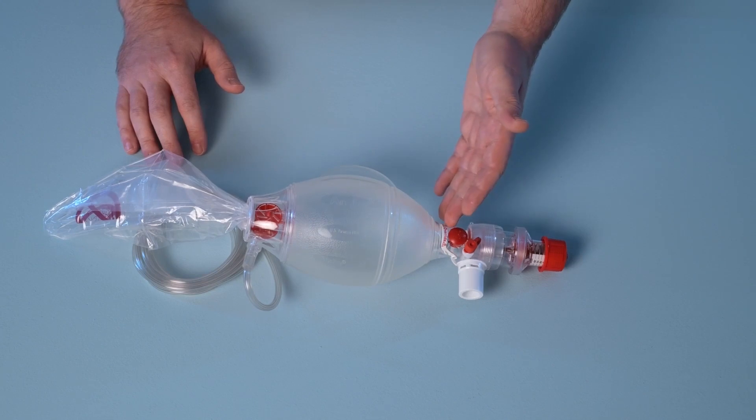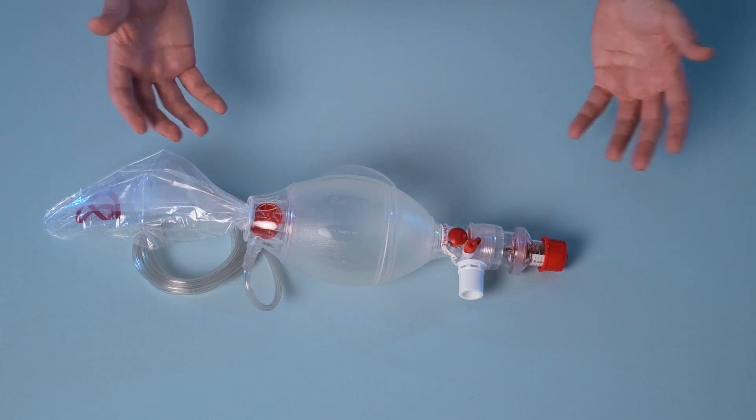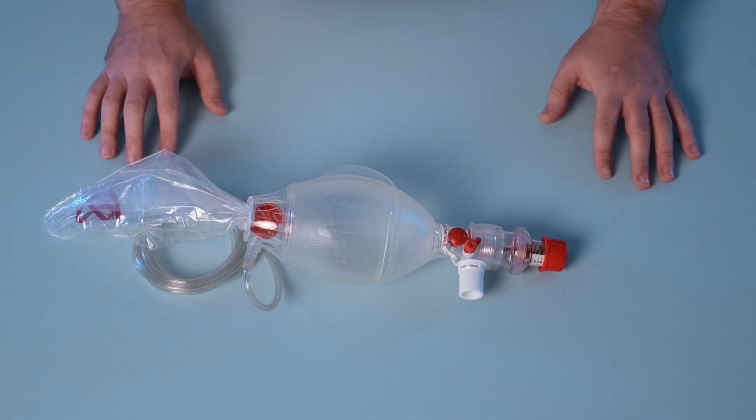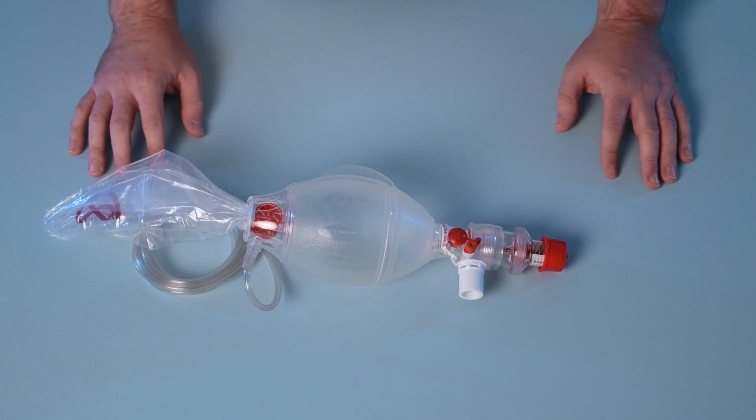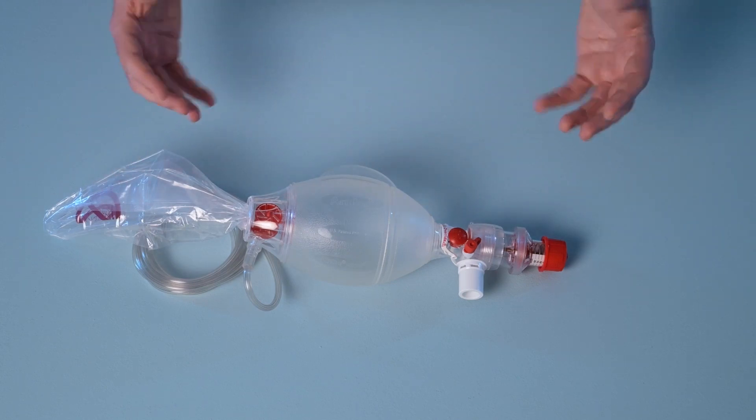An override clip is included which can be engaged to prevent the activation of the pressure limiting valve, and this can be used in cases where higher ventilation pressures are required in order to achieve suitable ventilation.